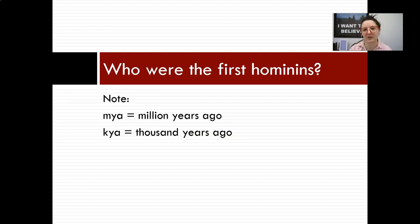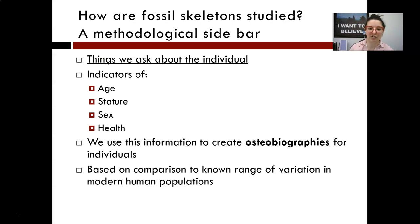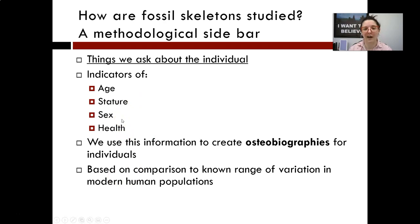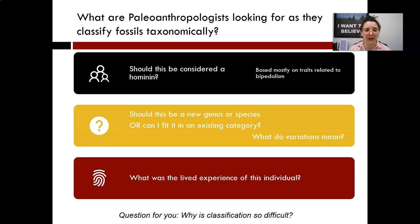A couple of quick abbreviations: MYA means millions of years ago, KYA means thousands of years ago — we're dealing with quite an immense scale. It's also important to note that we don't just attempt to identify the species these fossil remains belong to, but we ask questions about the individual itself. We look at sex estimation, age estimation, stature, overall build, and health metrics to construct an osteobiography — a story of the bone — to understand the lived experience of our earliest ancestors.